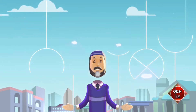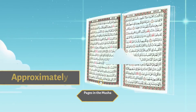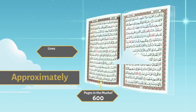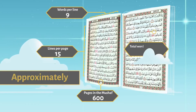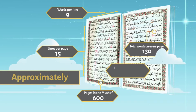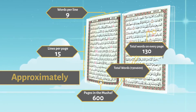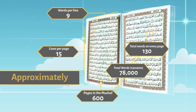In the most commonly printed Quran copy, pages in the Mus'haf are 600, lines per page are 15, words per line are 9, total words on every page are 130, and total words in the Quran are approximately 78,000.